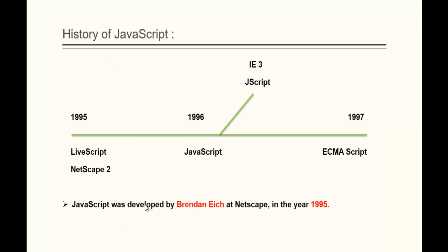JavaScript was developed by Brendan Eich at Netscape in the year 1995. It first became built into the web browser Netscape 2. They called it with the name LiveScript. But keep in mind, Sun Microsystem's Java language was the new big deal at that time. So Netscape and Sun Microsystem had an agreement to rename LiveScript to JavaScript.